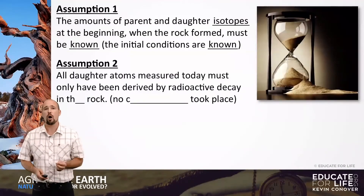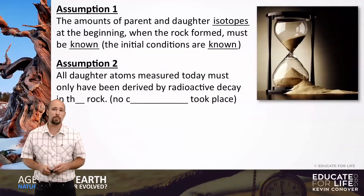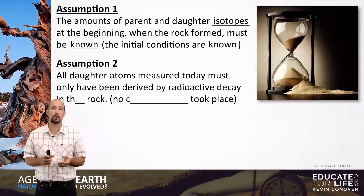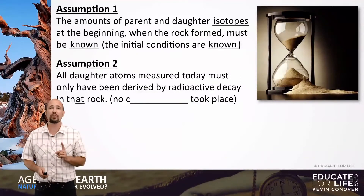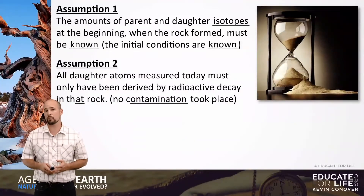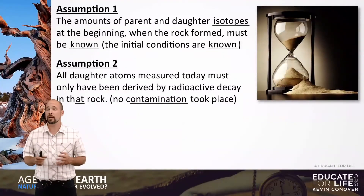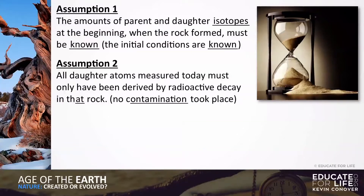Assumption two: all the daughter atoms measured today must only have been derived by radioactive decay in that rock — there can be no contamination. But in reality, daughter isotopes will leach in and out of a rock. Water will bring daughter isotopes in, making the rock look older than it actually is.